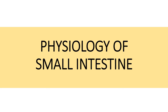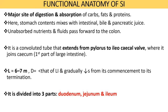Now let us come to the physiology of small intestine. The small intestine is the major site of digestion and absorption of carbohydrates, fats and proteins in the body. It is especially in the duodenum where the stomach contents mix with intestinal bile and pancreatic juice. After mixing of the chyme, most of the essential nutrients are absorbed by the body, and unabsorbed nutrients and fluids pass forward towards the large intestine. The small intestine is a 6 to 7 meter long convoluted tube extending from the pylorus to the ileocecal valve. It can be divided into three parts: duodenum, jejunum and ileum.